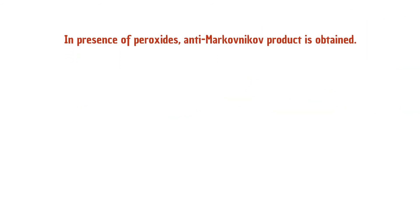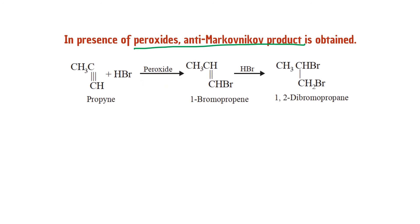In presence of peroxide, anti-Markovnikov addition occurs: the negative part (Br⁻) attaches to the multiple-bonded carbon where hydrogen is more. So with HBr and peroxide, the Br attaches to the carbon with more hydrogen, giving 1-bromopropene as the major product.